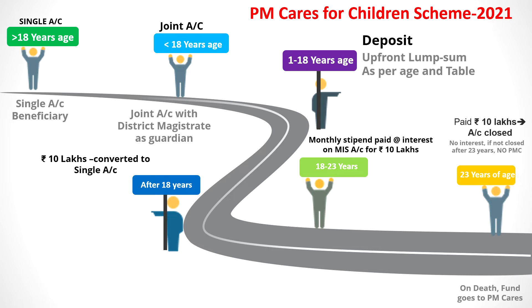After completion of the 18-to-23-year period, when the child reaches age 23, the account will be closed and 10 lakh rupees will be paid to the child. You should remember that even if you do not close the account after 23 years of age, no additional interest will be given — interest is paid only up to age 23. Premature closure is also not allowed. If the child dies during the period, the fund goes back to the PM Cares Fund and nothing will be paid to any other person, as there is no nominee provision.